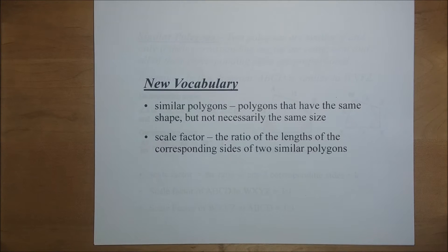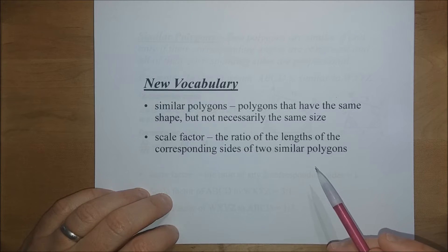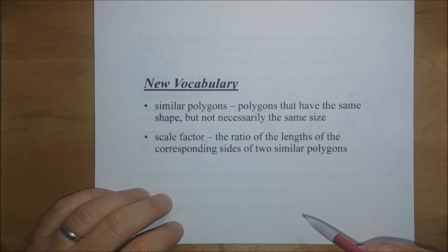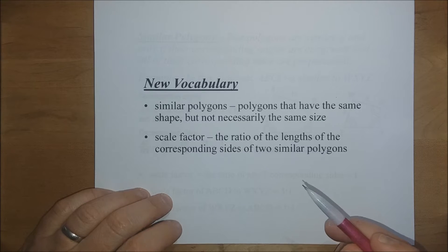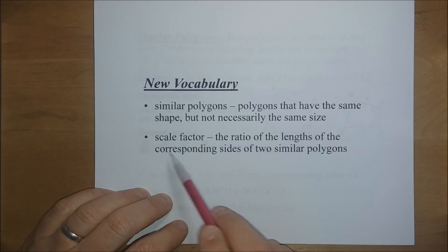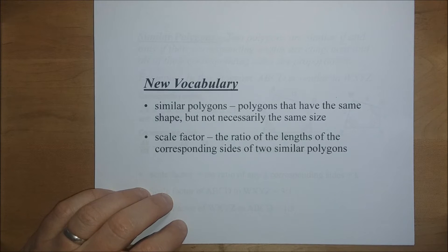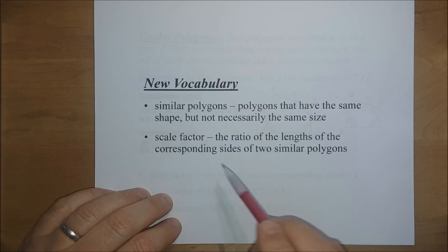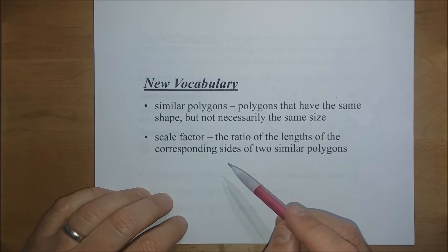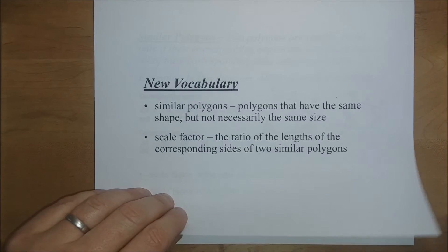Similar polygons are polygons that have the same shape but not necessarily the same size — you might say they're proportional, like one is a miniature version of the other. Our other vocabulary word is scale factor: the ratio of the lengths of the corresponding sides of two similar polygons, which basically means how much bigger one is than the other. If one is twice as big, the scale factor would be two.